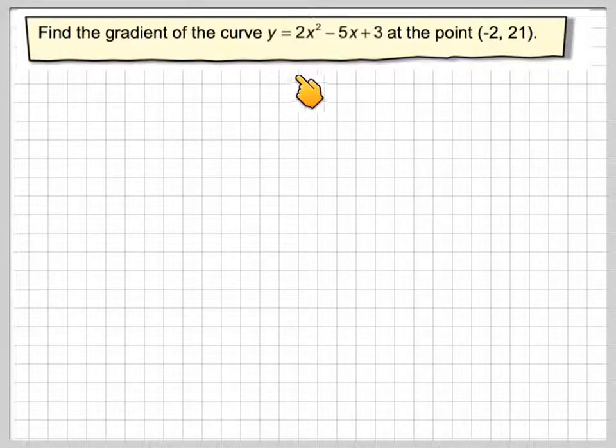Find the gradient of the curve y equals 2x squared minus 5x plus 3 at the point (-2, 21). So we've got y is 2x squared minus 5x plus 3.